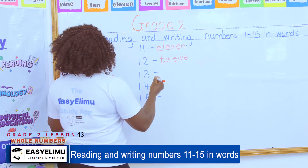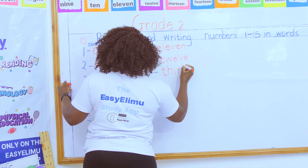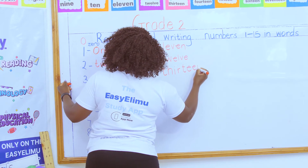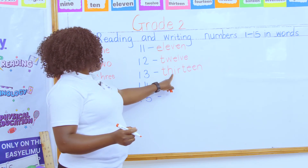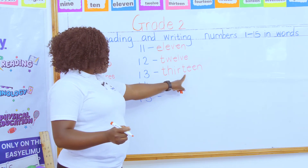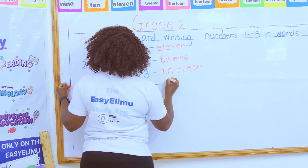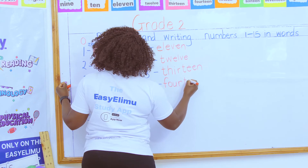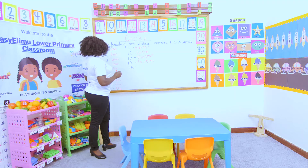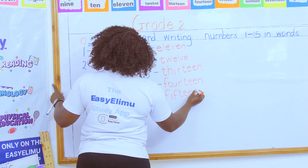From the word 'three' you form the word thirteen, spelled T-H-I-R-T-double-E-N. From the word 'four' you form fourteen, and from the word 'five' we form fifteen. Very good!